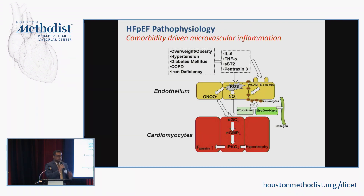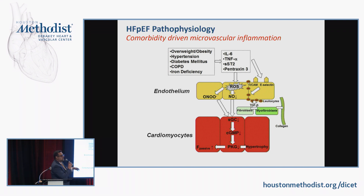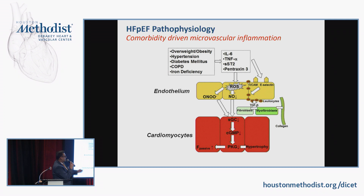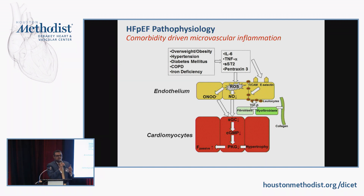The pathophysiology of HFpEF is related to comorbidities. Comorbidities such as obesity, hypertension, and diabetes create a state of chronic inflammation, resulting in the release of inflammatory mediators like IL-6 and TNF-alpha, which do two things downstream. One is that they recruit inflammatory cells which cause fibrosis via the TGF-beta pathway.